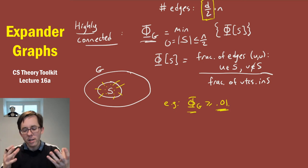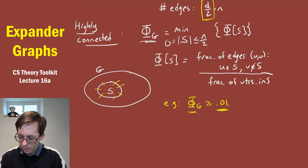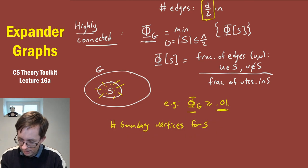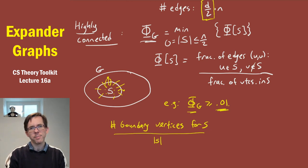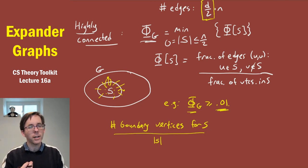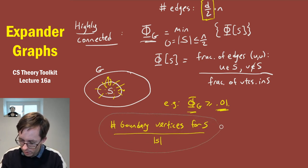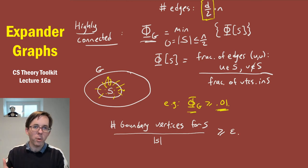Here we looked at the number of edges on the boundary of S divided by the number of vertices in S — that's called edge expansion. But it's also reasonable to look at the number of boundary vertices for S divided by the number of vertices in S. A boundary vertex is just a vertex that has at least one edge into S. It's not quite the same as boundary edges, because a vertex on the boundary of S could have more than one edge going into S. But it's pretty related, because we're focusing on d-regular graphs where d is constant, so this can change the ratios by at most d. Hoping that this fraction of vertices is at least some absolute constant ε is another reasonable way to define expansion.